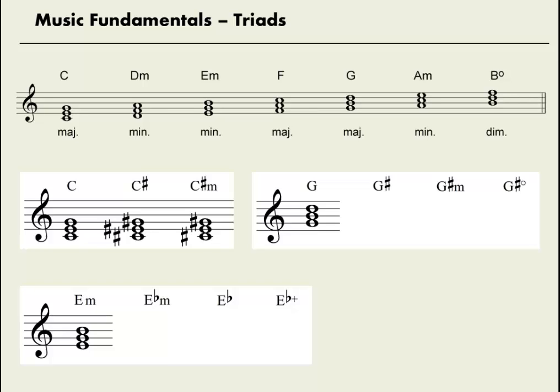Let's look at three other chords with a G spelling. G B D is G major. To make G sharp major, we'll raise all three. To make G sharp minor, we lower the third. And to make G sharp diminished, we lower the fifth.